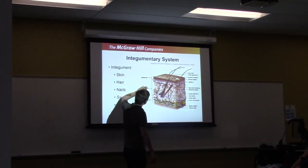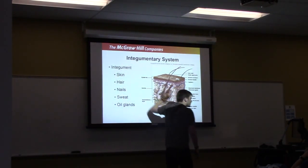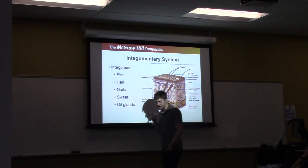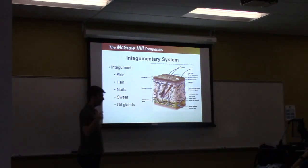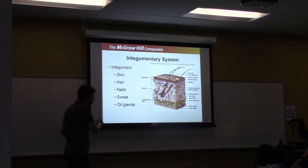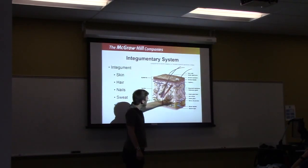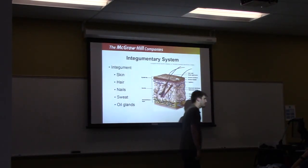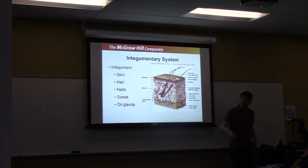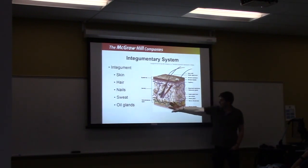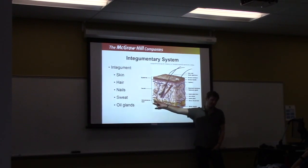Below the epidermis is the dermis, usually the largest layer of skin. In here you have all the accessory organs — hair follicles, sebaceous glands which secrete oil, and sweat glands — as well as blood vessels and nerves. Below the dermis is the subcutaneous layer, which contains adipose tissue (fat) and larger blood vessels.